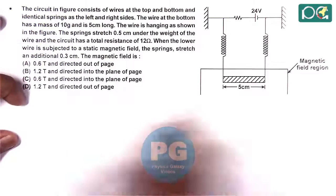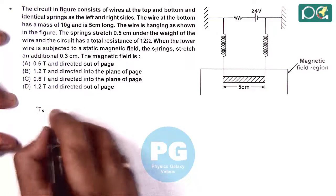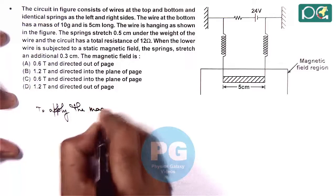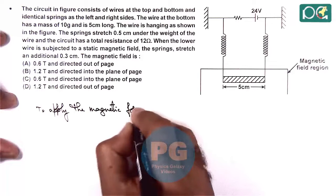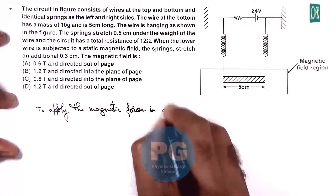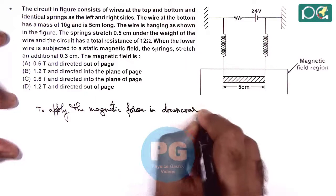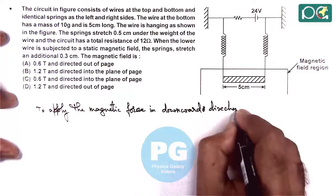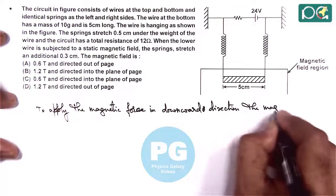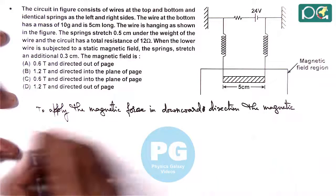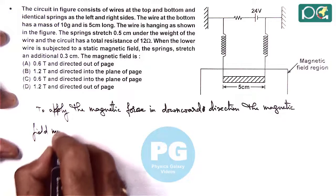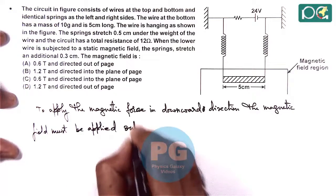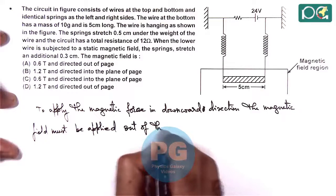So here we can say to apply the magnetic force in the downward direction, the magnetic field must be applied out of the page. Here it must be applied out of the page.